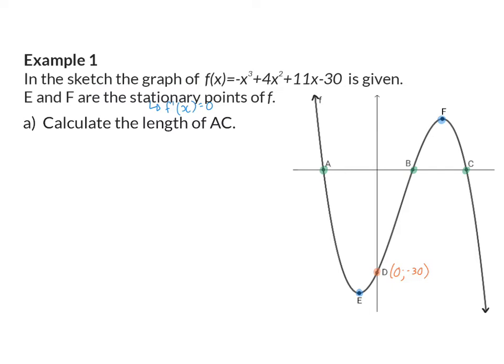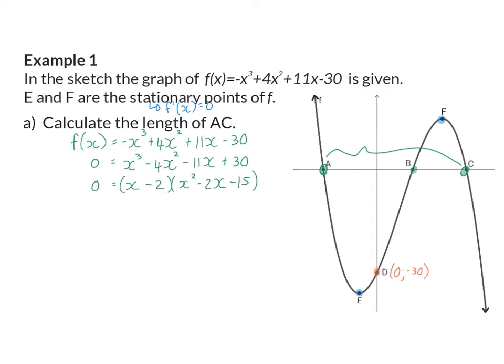Question A: calculate the length of AC. AC is a horizontal length, and to determine the length of a horizontal line we need to know the x-values at the starting and end point of the line segment. A and C are both x-intercepts of this function, so we need to start off determining the x-intercepts of F. We take the function and put it equal to zero and factorize. From the factorization we can determine that the x-intercepts will be at 2, at -3, and at 5.